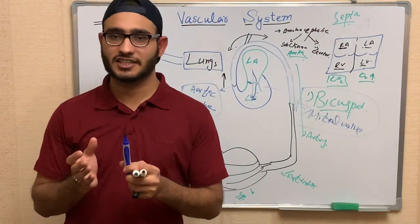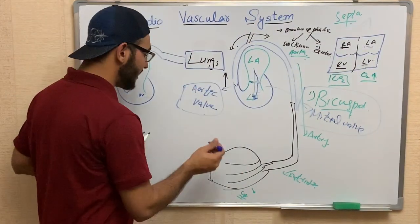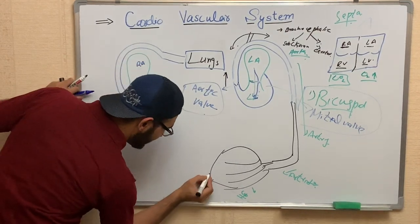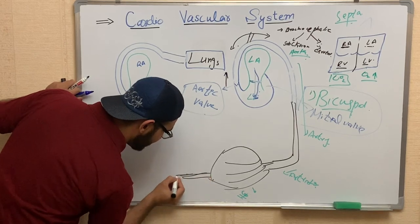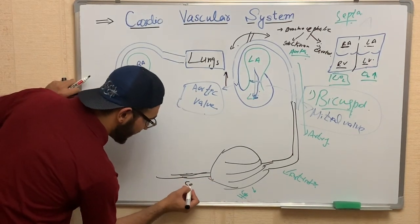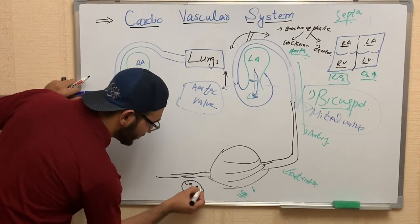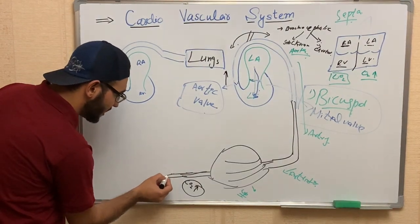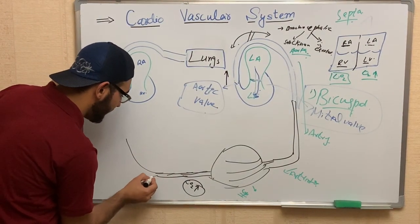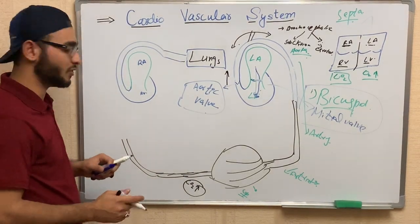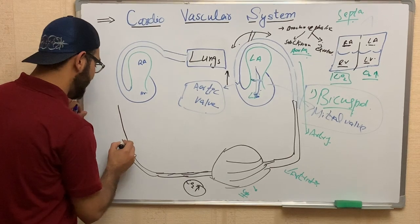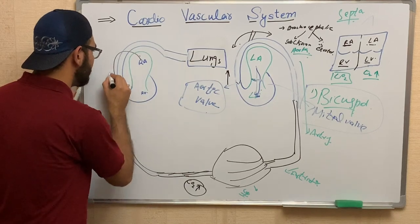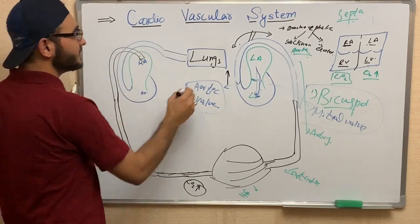In the capillaries, gas exchange occurs and the oxygenated blood changes into deoxygenated blood. From the capillaries, venules carry blood with a high level of carbon dioxide — this is now deoxygenated blood. This deoxygenated blood enters the veins, and from the lower limb, with the help of the inferior vena cava, it enters the right atrium.